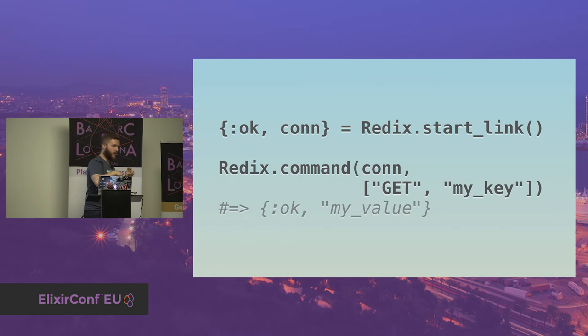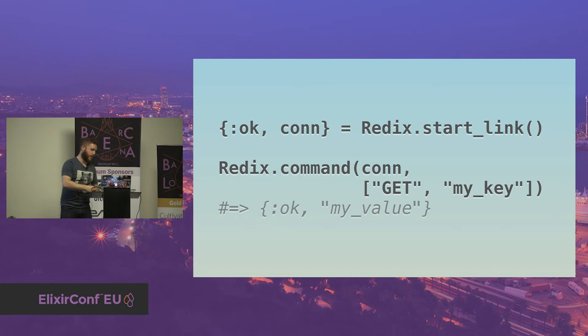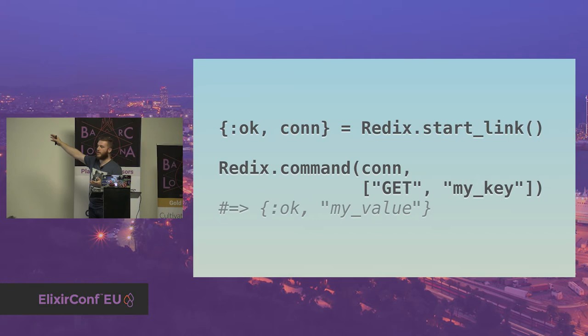But when you do start_link, a bunch of stuff happens — you connect to Redis, negotiate the protocol. When you do command, you do encoding, send the thing, handle concurrent requests from multiple clients to the same Elixir connection, wait for the response to come back, decode, route to the correct client. There's a bunch of code going on behind the scenes. But the API is simple — I'm not introducing any new concept or idea.